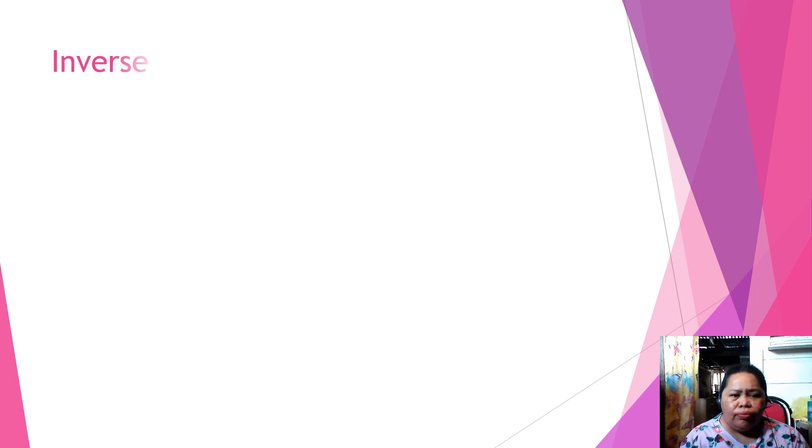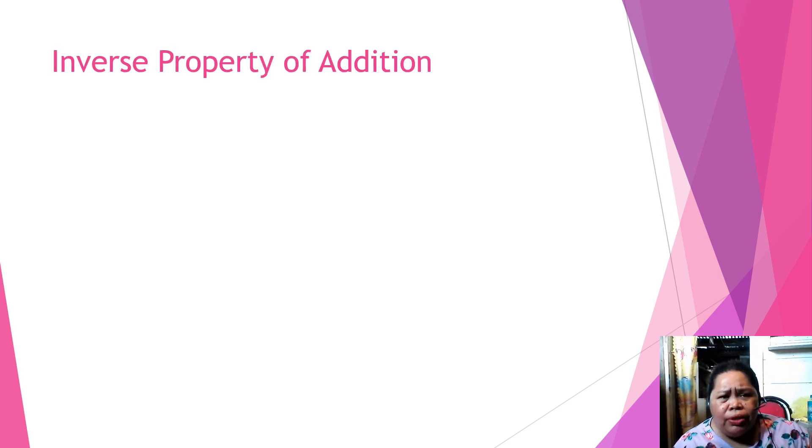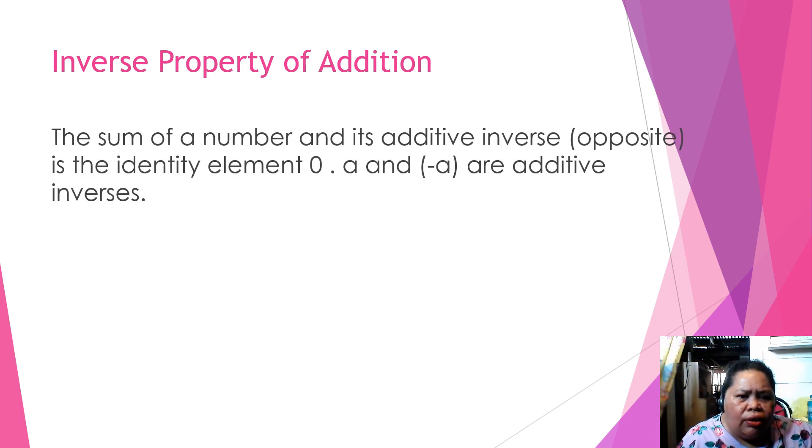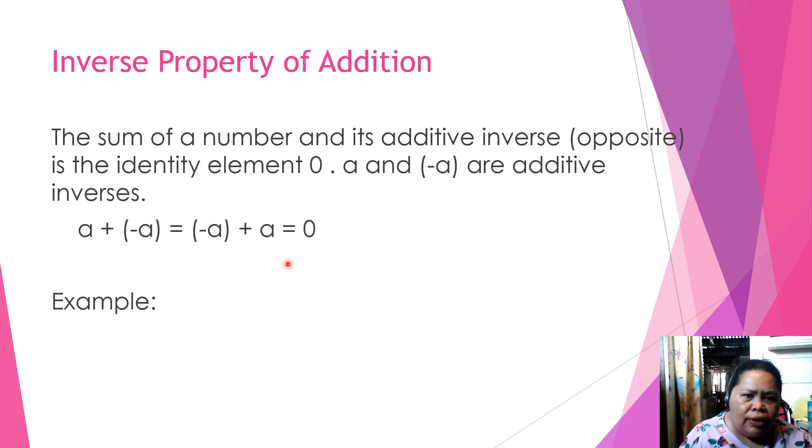We have inverse property of addition. The sum of a number and its additive inverse or the opposite is the identity element of 0. A and negative A are additive inverses. A plus negative A is equal to negative A plus A. That is equal to 0. Example, 12 plus minus 12 equals 0.